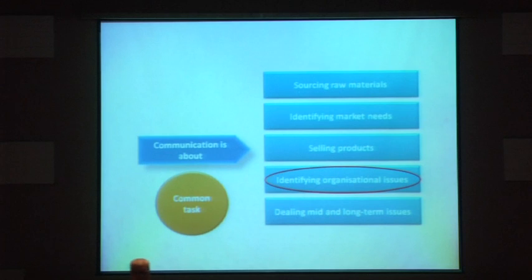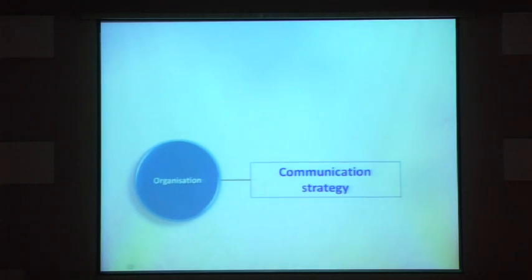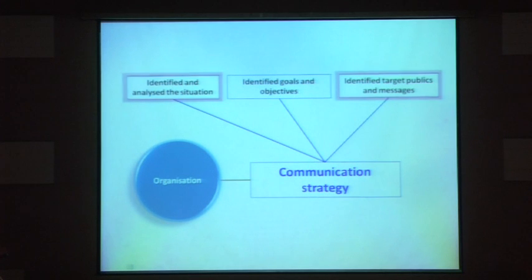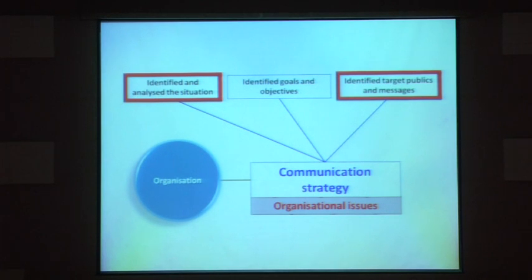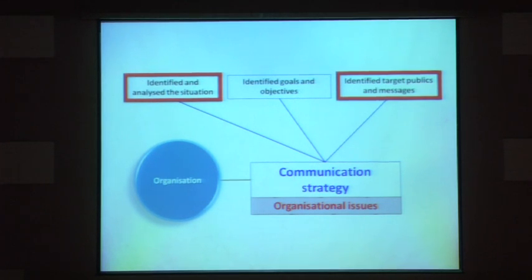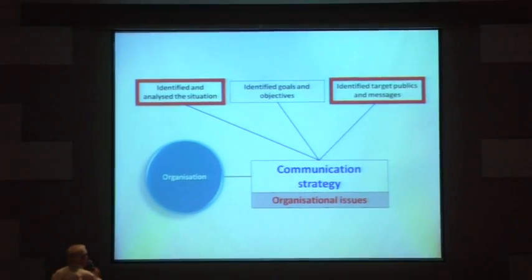When we've identified those issues, we develop a communication strategy — whether it's a marketing strategy, a public relations strategy, a sales strategy, or an issues communication strategy. We follow some basic principles: identify and analyse a situation, identify goals and objectives, identify target publics, markets, audiences, and the messages we need to give them. In strategic communication, the messages are about arguments. In marketing communication, they're about 'hey, this product is fantastic — buy six of them right now,' generating repeat sales.